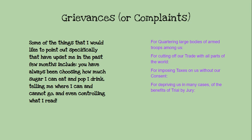So the grievances — these are the complaints that the colonists listed. On the left again is from the breakup letter, saying things like: you have to tell me how much sugar I can eat — that's a little nod to the Sugar Act — how much pop I can drink, and telling me where I can and cannot go, even controlling what I read. Some of the grievances from the actual Declaration of Independence were: for quartering large bodies of armed troops, for cutting off our trade with all parts of the world, for imposing taxes on us without our consent, and for depriving us in many cases of the benefits of trial by jury. Their list of complaints would fill about three slides — so I just picked a couple of things.